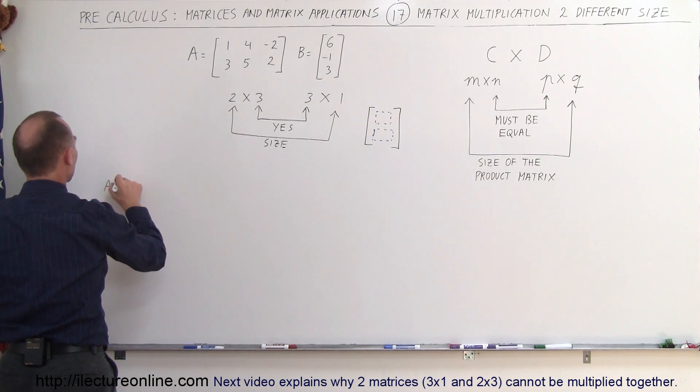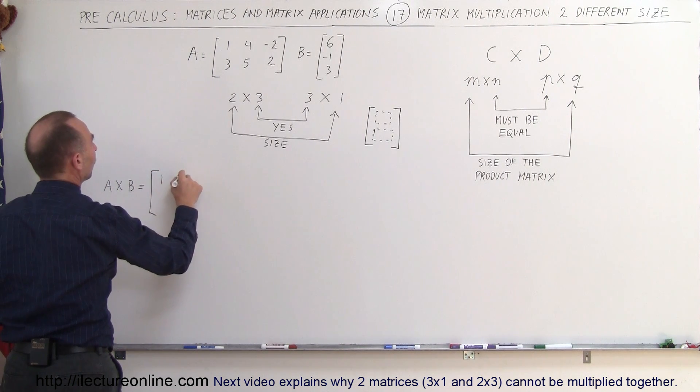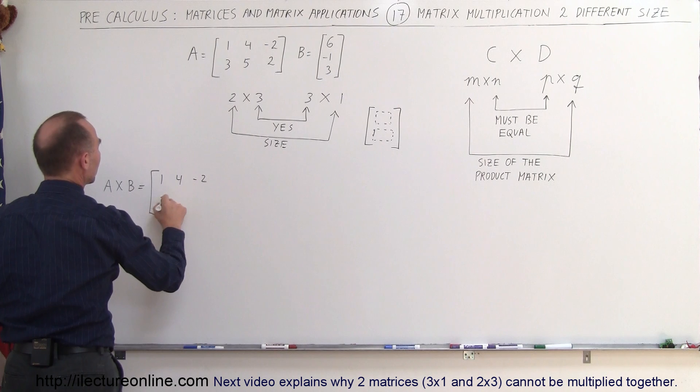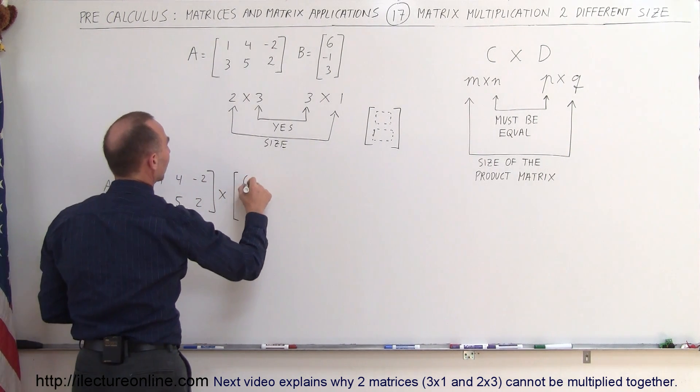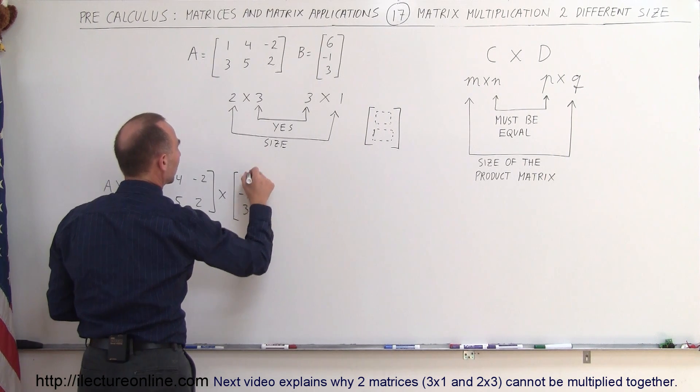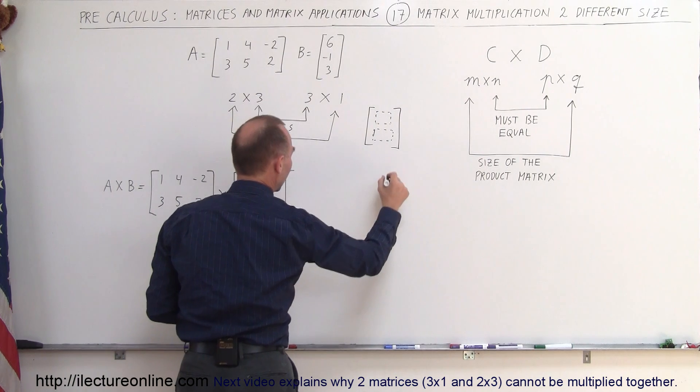So here we have A multiplied times matrix B, which is equal to 1, 4, negative 2, 3, 5, 2 multiplied times the matrix 6, negative 1, and 3. So that will result in a matrix looking like that, with just two elements.